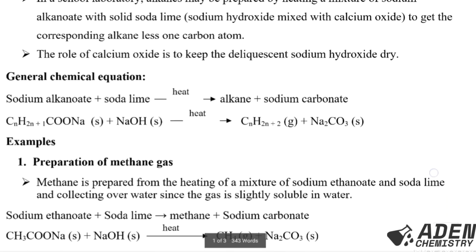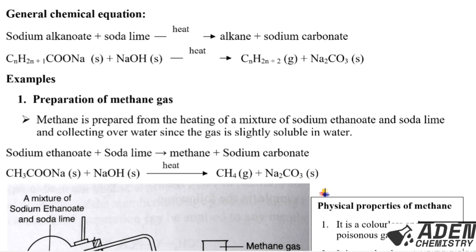The general equation for preparing alkanes in the lab is: sodium alkanoate plus soda lime, heated, gives alkane and sodium carbonate. The general chemical equation is: CnH(2n+1)COONa plus NaOH (from soda lime), heated, gives CnH(2n+2) as a gas plus sodium carbonate (Na₂CO₃) as a solid.